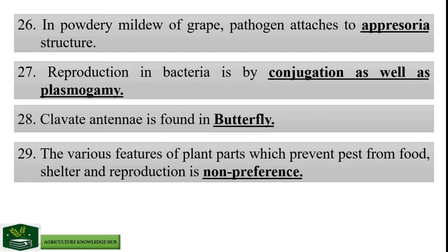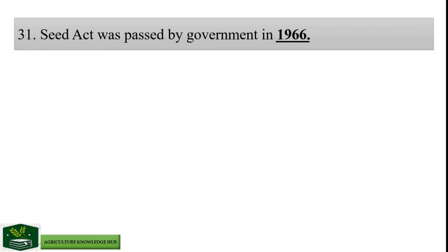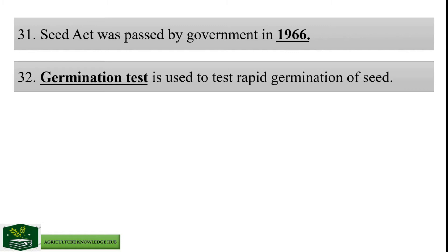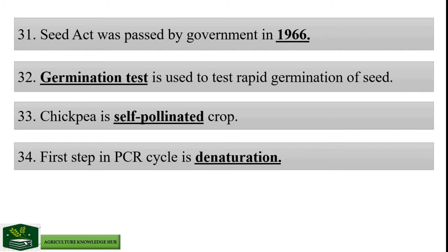Smoking in citrus orchard helps to control fruit sucking moth. Seed Act was passed by government in year 1966. Germination test is used to test rapid germination of seed. Chickpea is a self-pollinated crop. First step in PCR cycle is denaturation. PCR stands for Polymerase Chain Reaction.